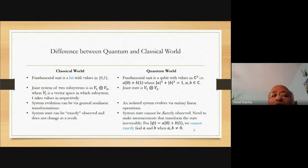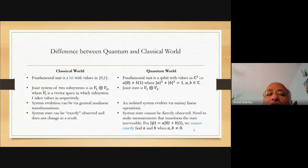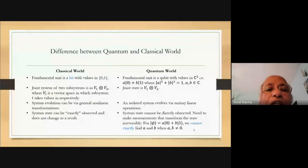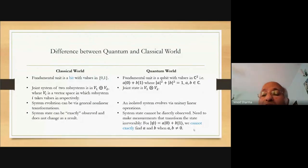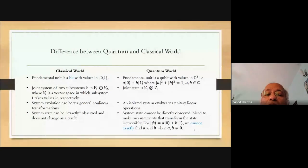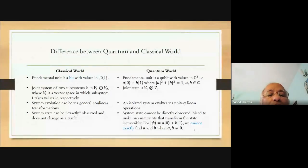In quantum mechanics, a qubit state may be a|0⟩ + b|1⟩, where |0⟩ and |1⟩ are the bases in C², and a and b are complex numbers where |a|² + |b|² = 1. In the classical case, if a system has two subsystems each taking values in vector space Vᵢ, the overall system takes values in the direct sum V₁ ⊕ V₂, but in the quantum case it's the tensor product V₁ ⊗ V₂. The dimension of V₁ ⊗ V₂ is n₁ × n₂, while for the direct sum it is n₁ + n₂.